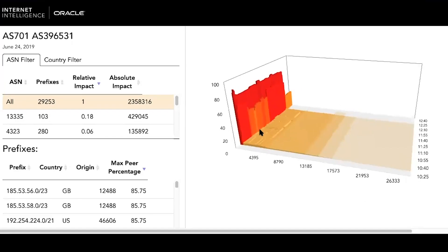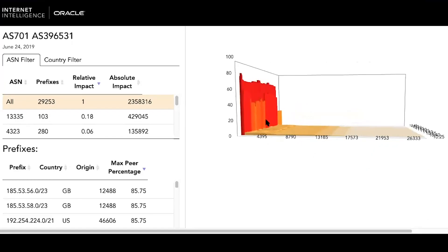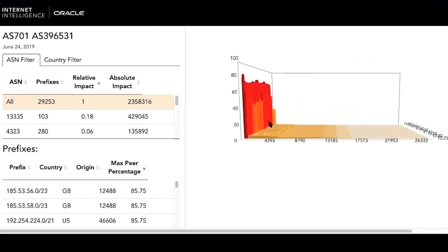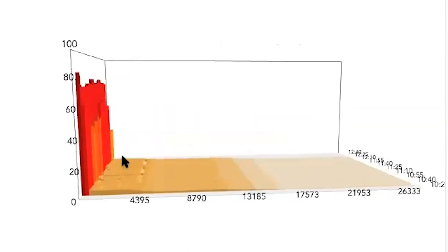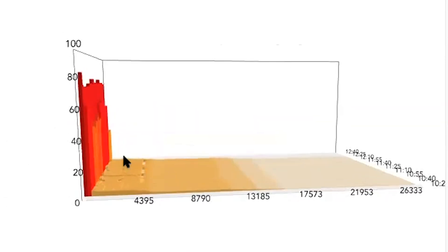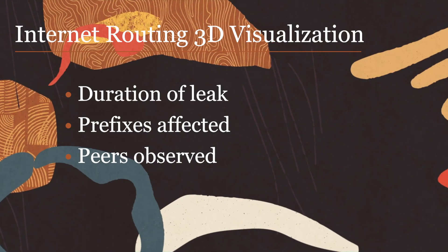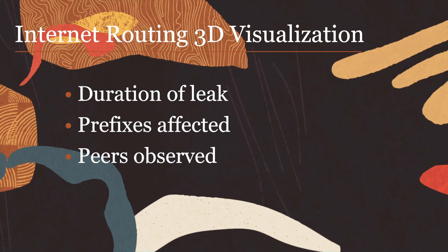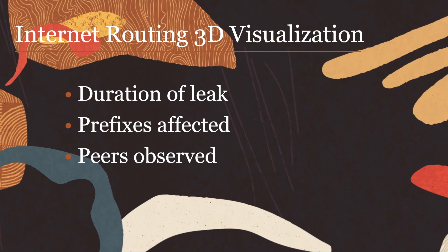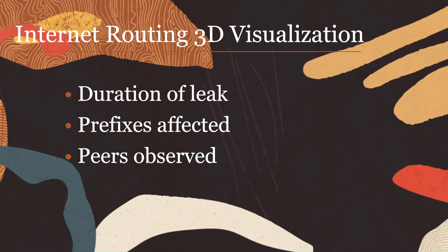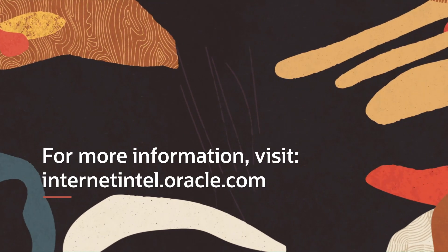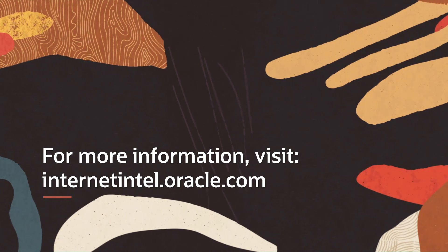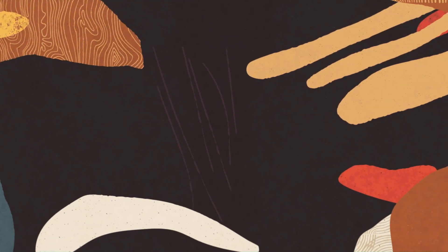The internet routing 3D visualization tool from Oracle Internet Intelligence shows the effects of BGP leaks. It measures and visualizes three metrics: how long traffic was misdirected for, how many IP addresses were affected, and how many service providers observed the incident. For more information, visit internetintel.oracle.com.